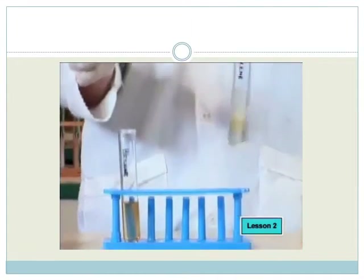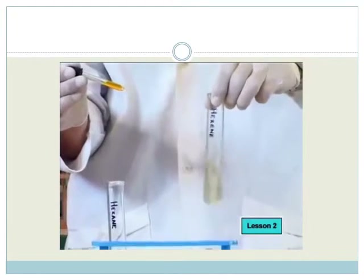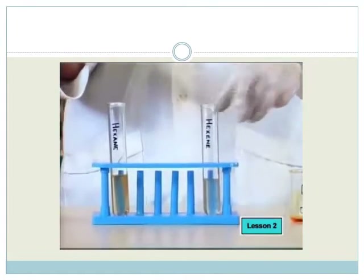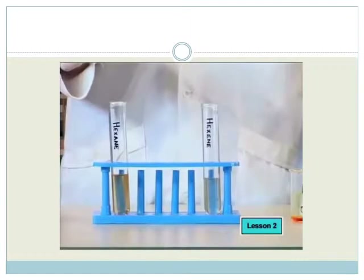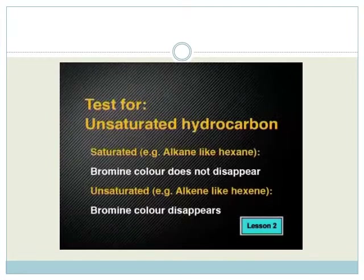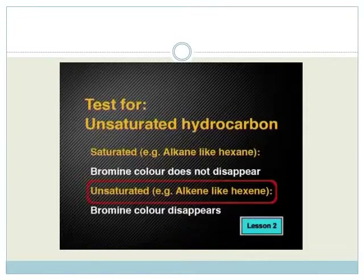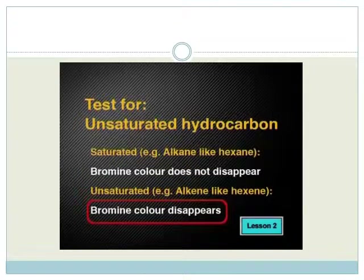It seems that nothing happens to the color of bromine when it's added to the hexane. Let's try hexene and see what happens. Once again, we add the same number of drops of the bromine solution to the hexene. Wow, this is interesting — when we add bromine to unsaturated hexene, the bromine color quickly disappears. We have a useful test for unsaturated hydrocarbons, whether they are alkenes or other types of molecules. When bromine is mixed with an unsaturated compound, bromine's color quickly disappears.